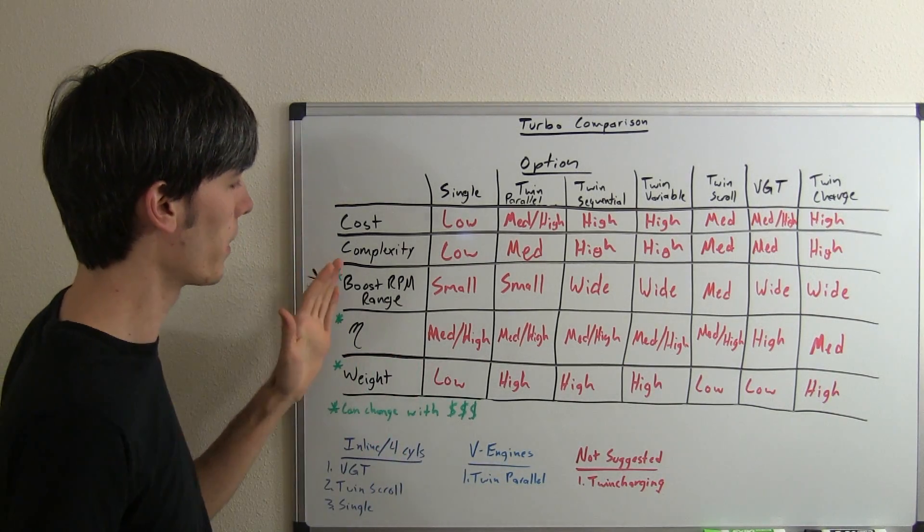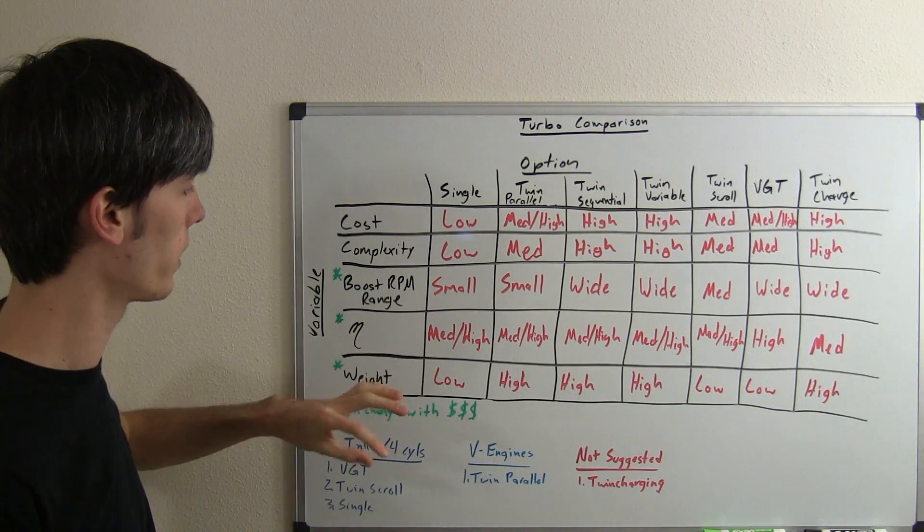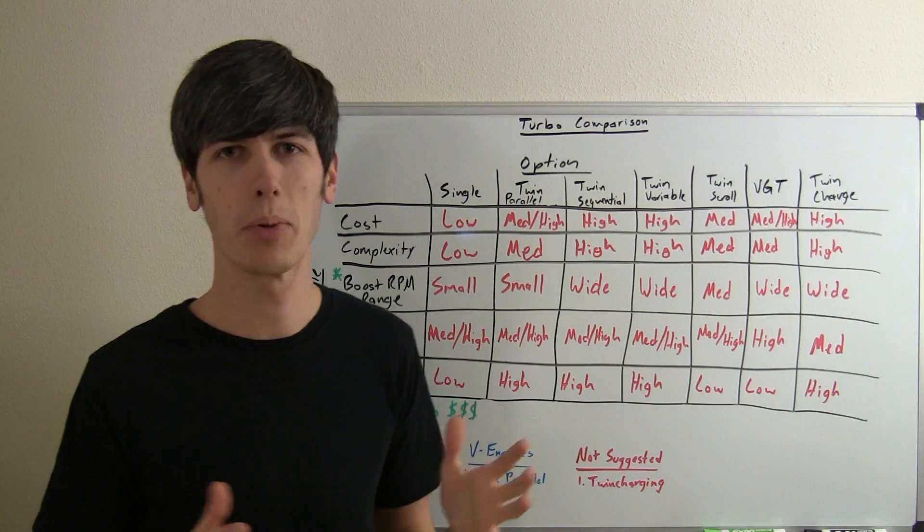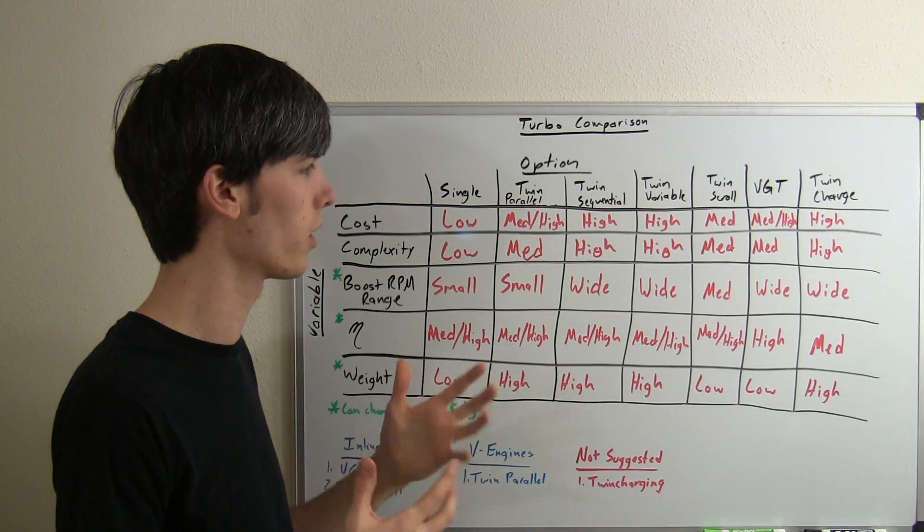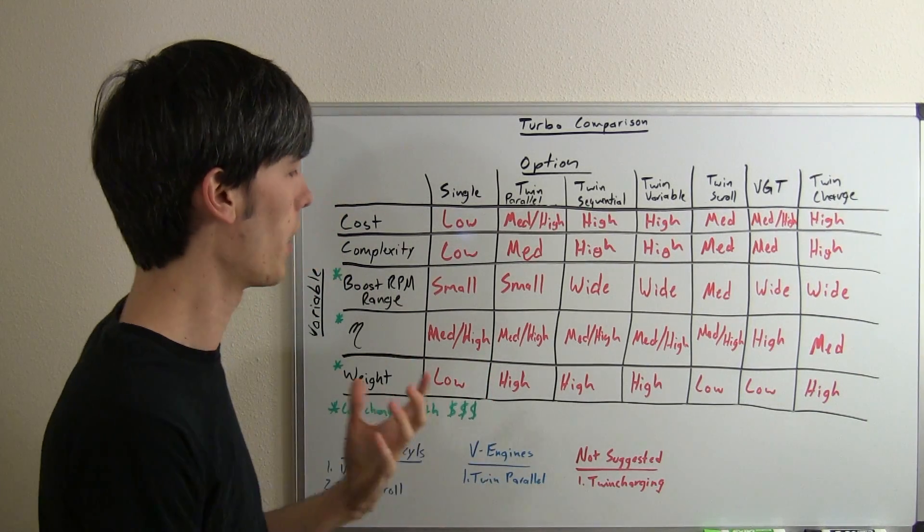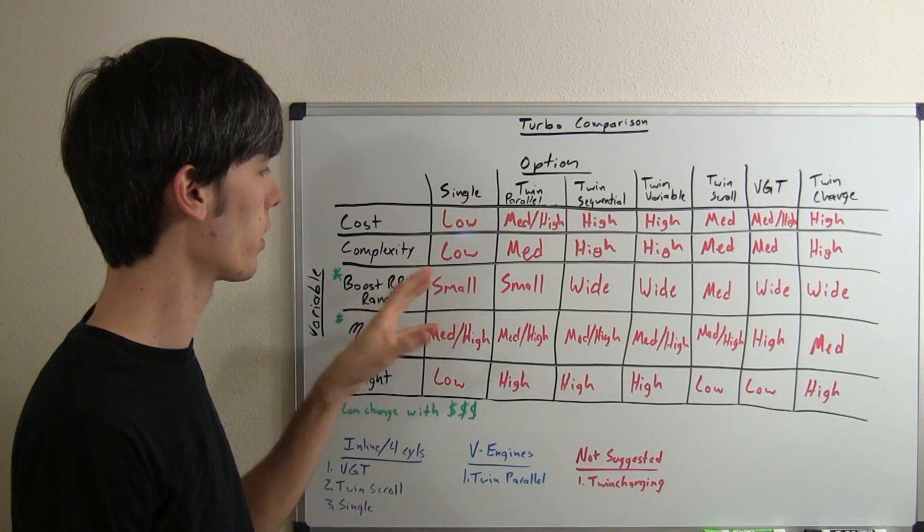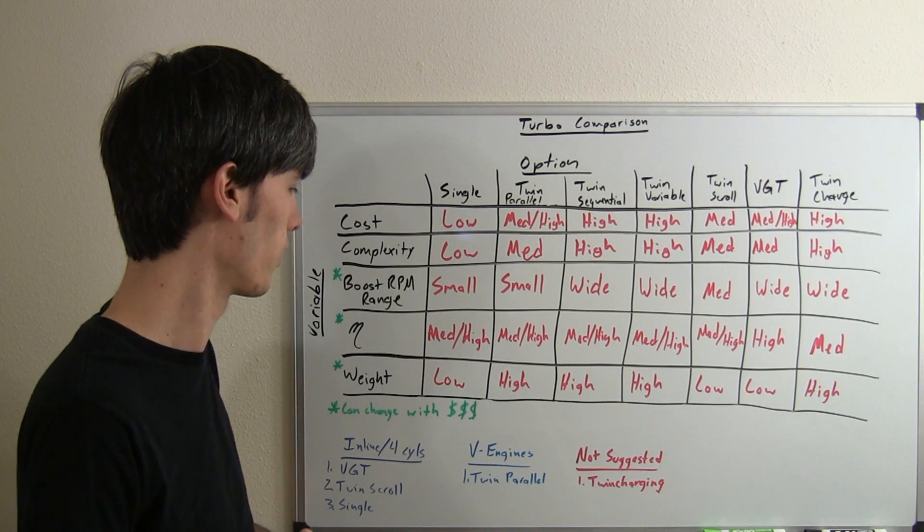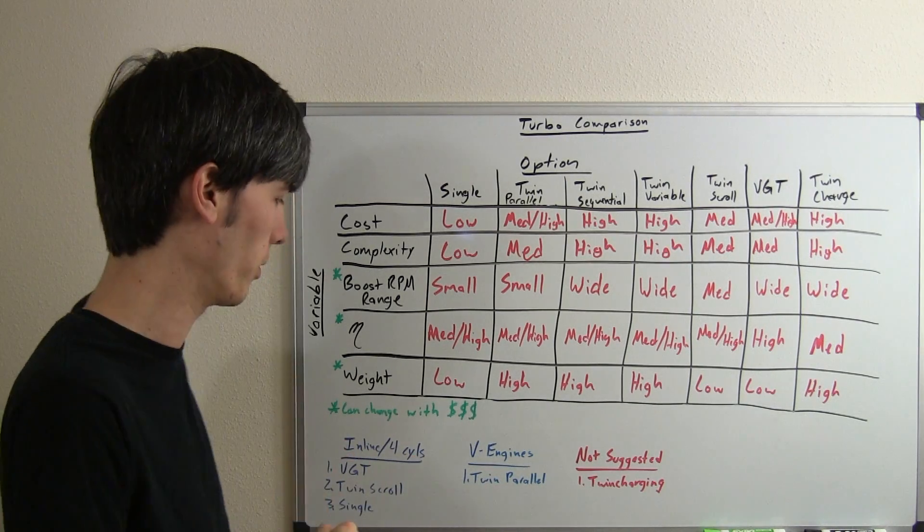So one thing that I do want to mention is these three here: the rev range, the efficiency, and the weight. You can always spend more money. You get what you pay for, so you put in more money, you get lighter weight materials, better materials, lower friction. And you can improve all of these different categories with money. The sky's the limit as far as what you want to do. You just have to pay for it.